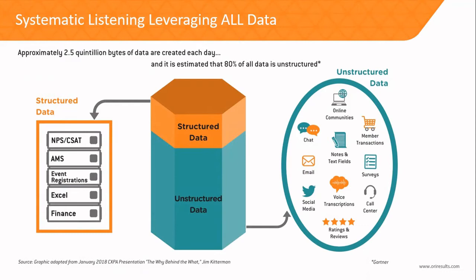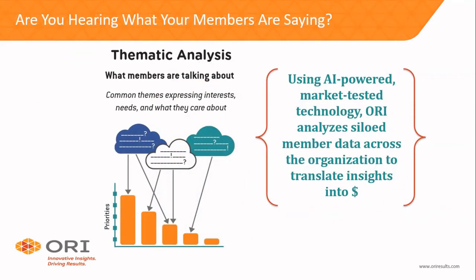What we're talking about with systematic listening is augmenting that structured data with all of the unstructured data that's out there, estimated at roughly 80% of customer feedback and commentary. The types of unstructured data we're discussing are shown in the teal oval on the right-hand side. It could be commentary on your online communities — perhaps a Higher Logic community forum — chat, email, or open-ended feedback in surveys. That's an area where a lot of data lurks that was previously very hard to mine and expensive to manually code.